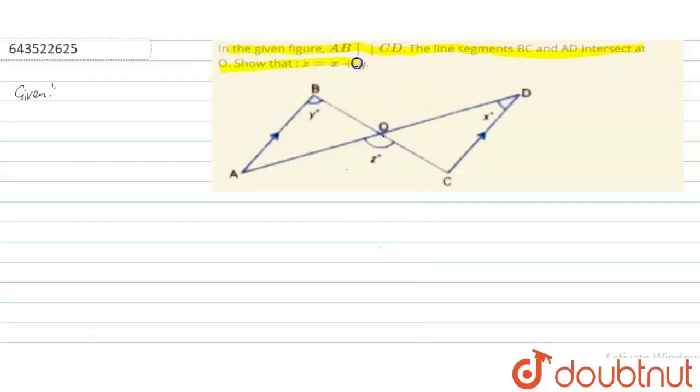And show that Z is equal to X plus Y. So let us begin, what is given? AB is parallel to CD is given, and BC and AD are intersecting at O, intersecting point.